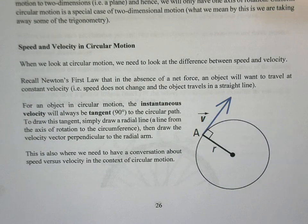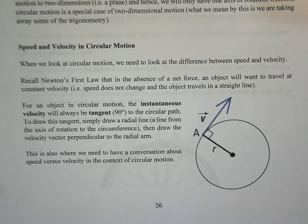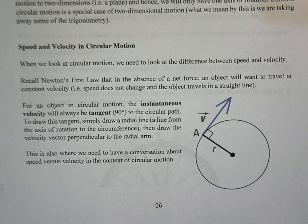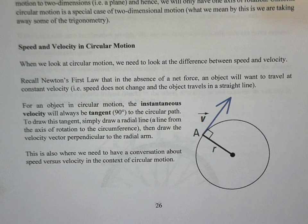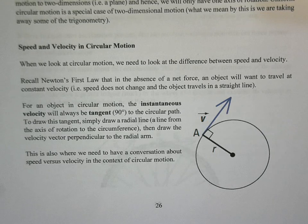In circular motion, we have to be careful about the distinction between speed and velocity. Speed is just the magnitude of how far you're going per unit time, whereas velocity measures displacement per unit time and includes direction. Newton's first law states that in the absence of a net force, an object travels at constant velocity — a straight line at constant speed — consistent with the law of inertia.